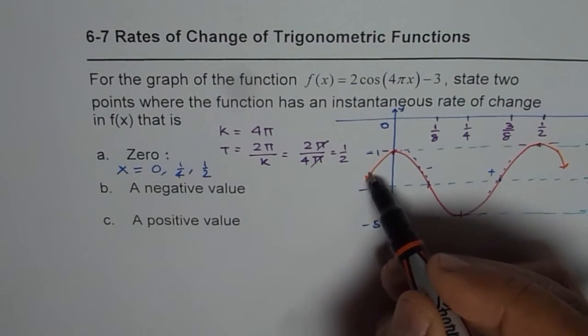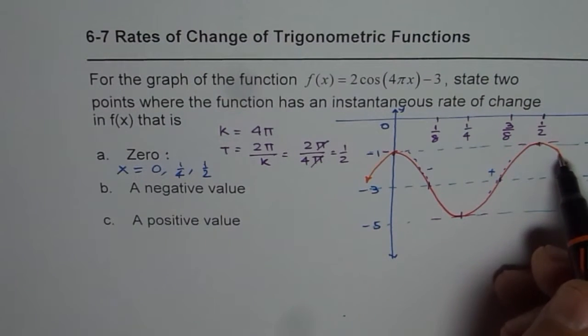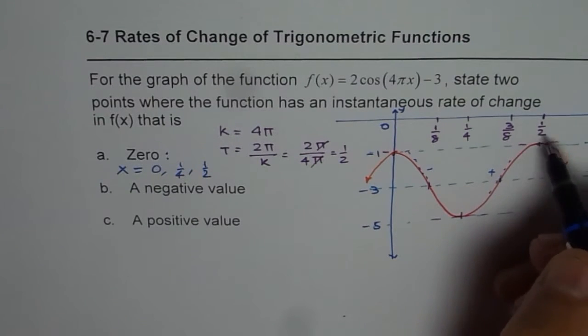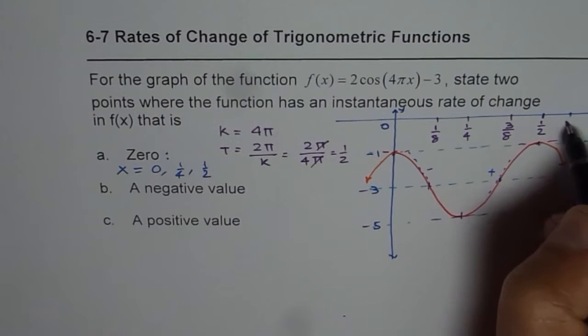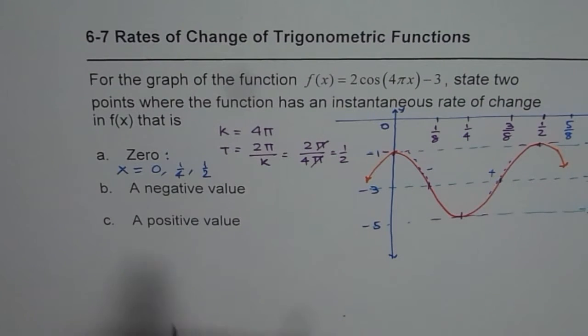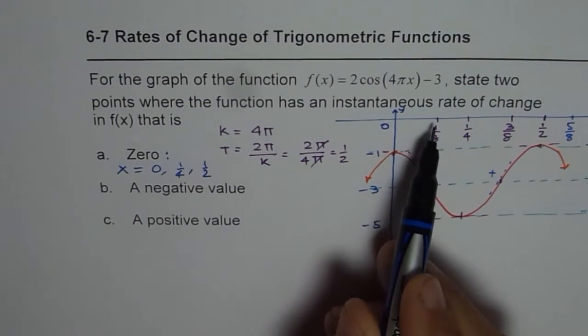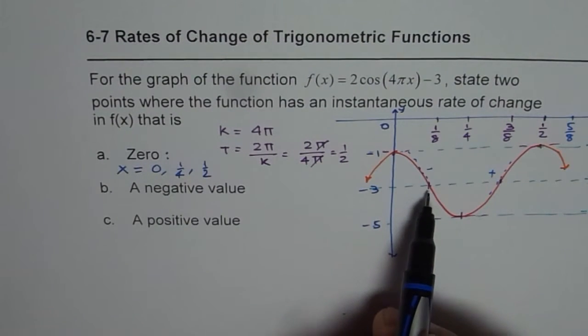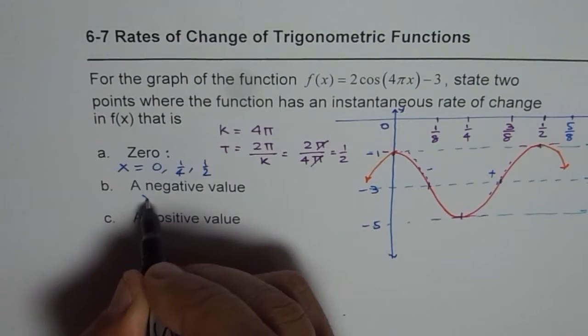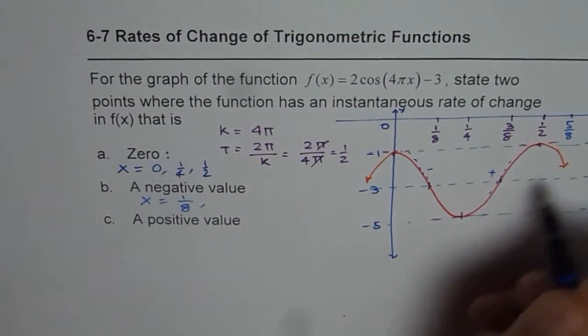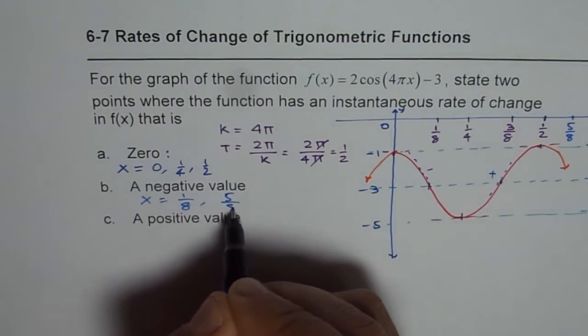So it is positive here and negative after half. So we could write points as 3 by 8, 4 by 8. Let us say this is 5 by 8. So negative value of instantaneous rate of change, I could say, is at 1 by 8. For example, x equals 1 by 8 or this side, 5 by 8. Do you see that? Like that.